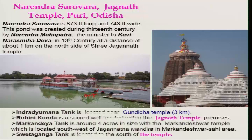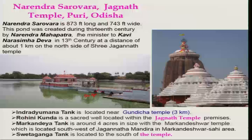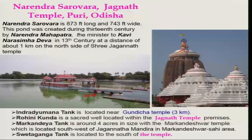There are several other water tanks: the Indradumna tank is located near Gundicha temple, around 3 kilometers from the Jagannath temple. Rohini-Kunda is a sacred well located within the Jagannath temple premises. The Markander tank is around 4 acres in size in the Markandeswar temple area, located southwest of Jagannath Mandir. Swetaganga tank is located to the south of the temple. Some tanks may have been acquired by people, given today's widespread land-grabbing tendencies.